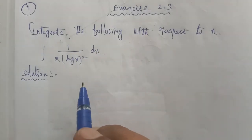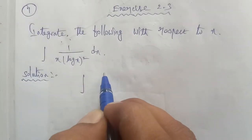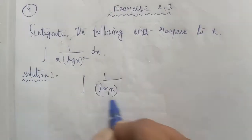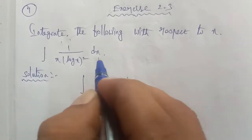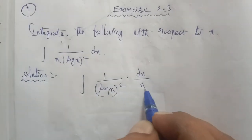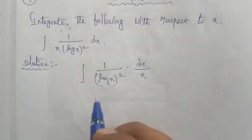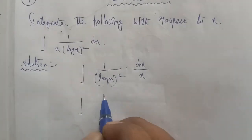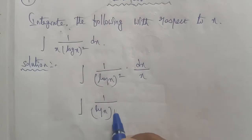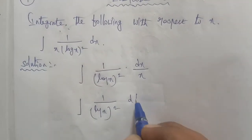So, this is the integration of 1 by (log x) whole power square, into dx by x. Note that dx by x is the differentiation of log x.